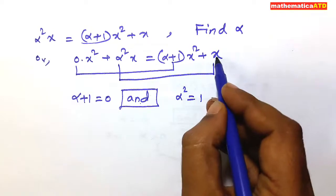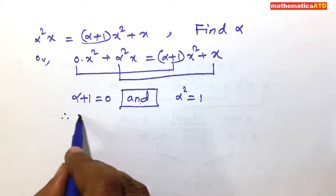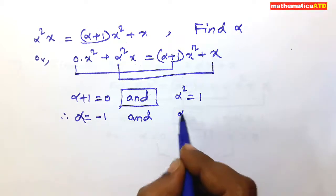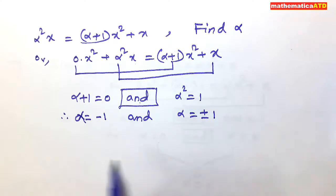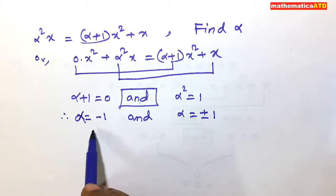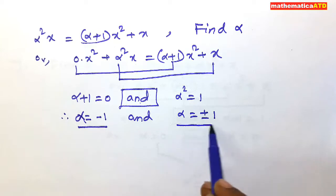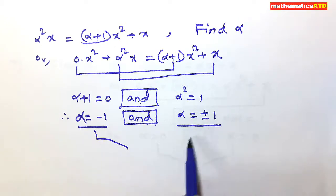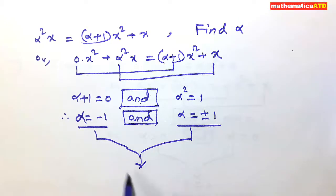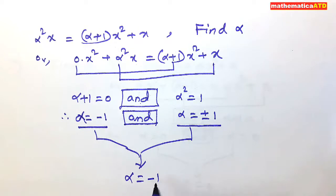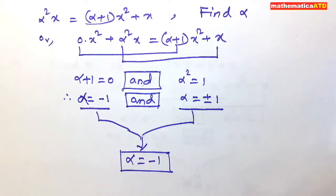And alpha squared is equal to 1. The coefficient of x on the right side is 1. From alpha plus 1 equals 0, alpha equals minus 1. From alpha squared equals 1, alpha equals plus or minus 1. There is only one solution from the first condition: minus 1, and two solutions from the second: plus 1 and minus 1. Since the conjunction is 'and', find the common solution of both — the common solution is only minus 1. So alpha is equal to minus 1. I think you have understood all the facts of comparison.